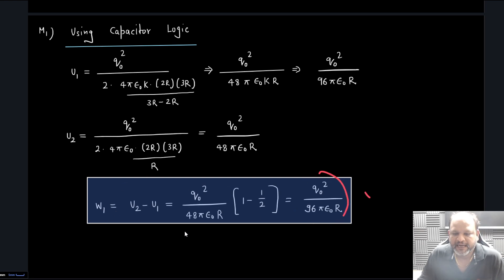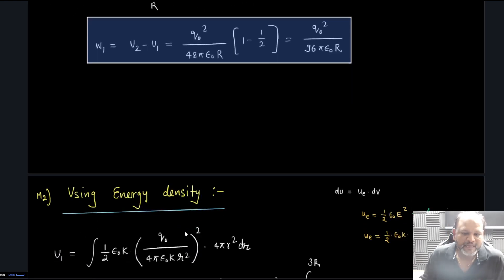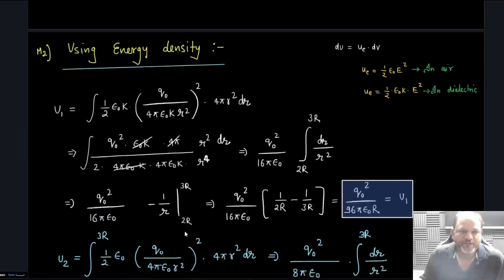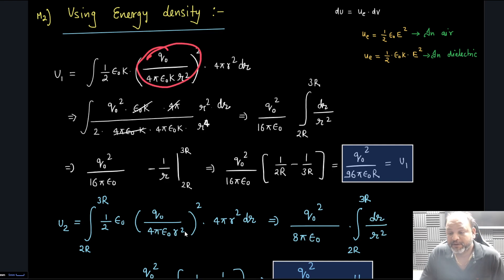Second is by using energy density, we should get the same answer. Energy density formula is half epsilon naught e square in air and if it is a dielectric medium half epsilon naught k e square. U1 I can write energy from 2r to 3r.